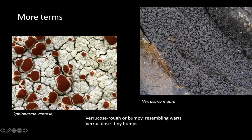Here's another example showing areolate texture with deep cracks separating different areas of the lichen, combined with this warty cauliflower-like look — that's verrucose.